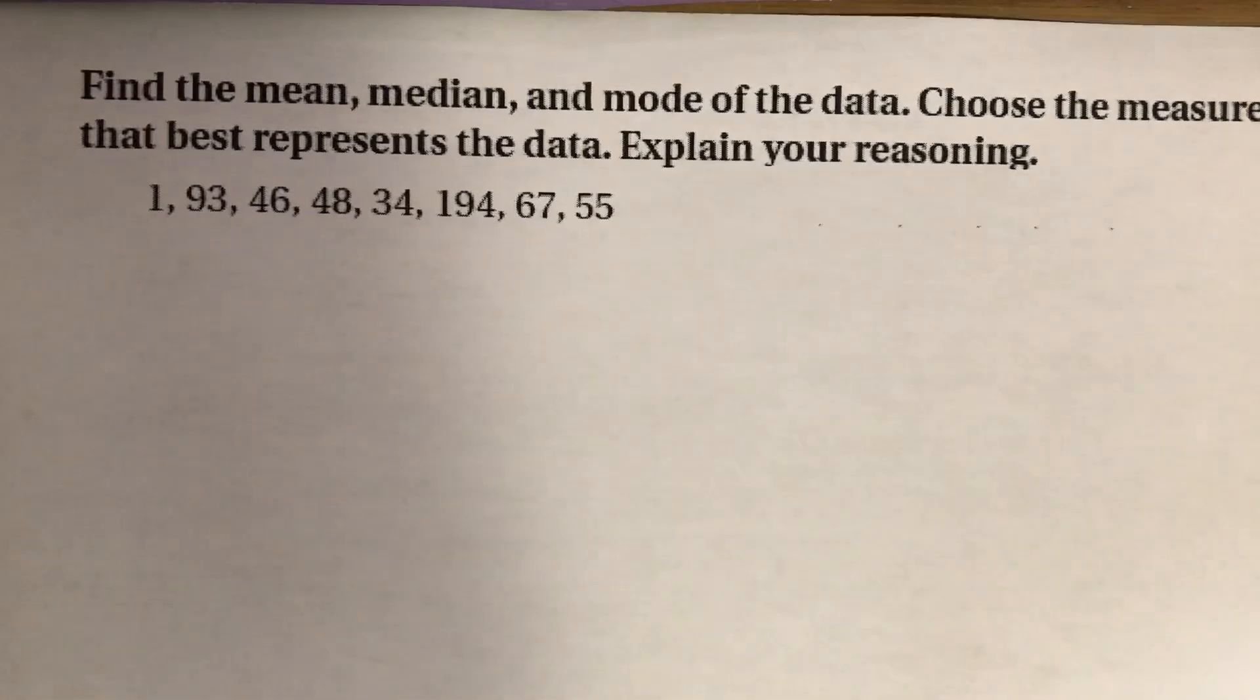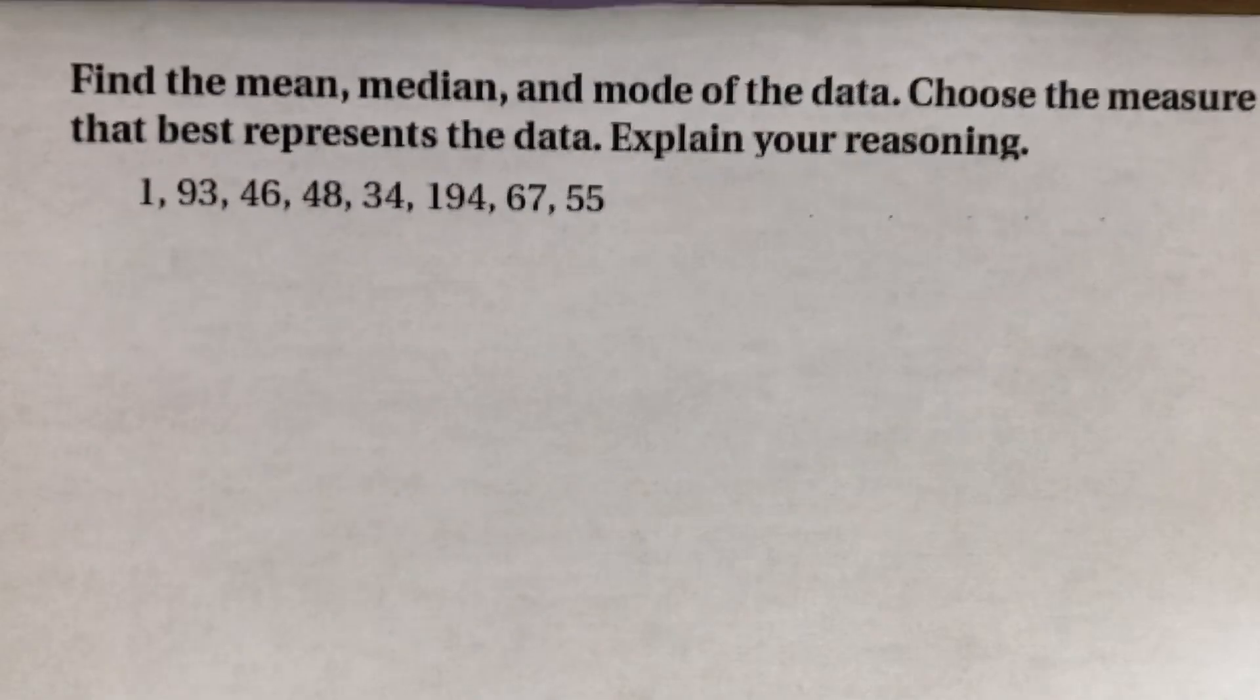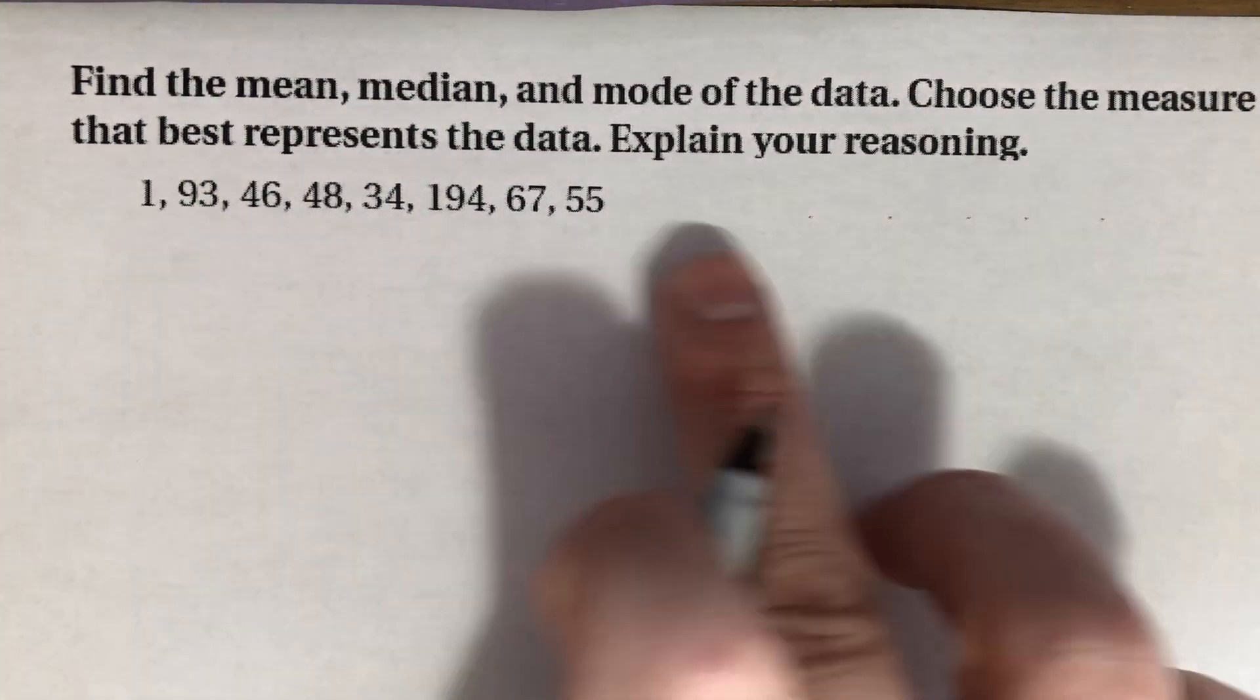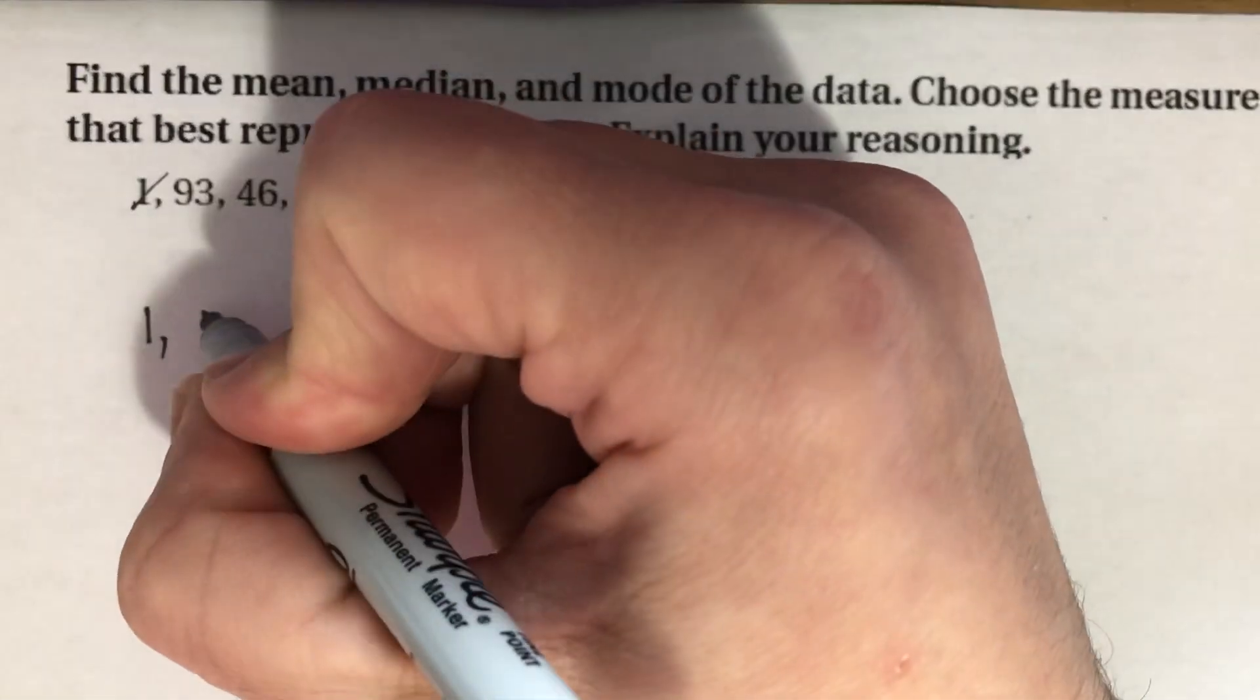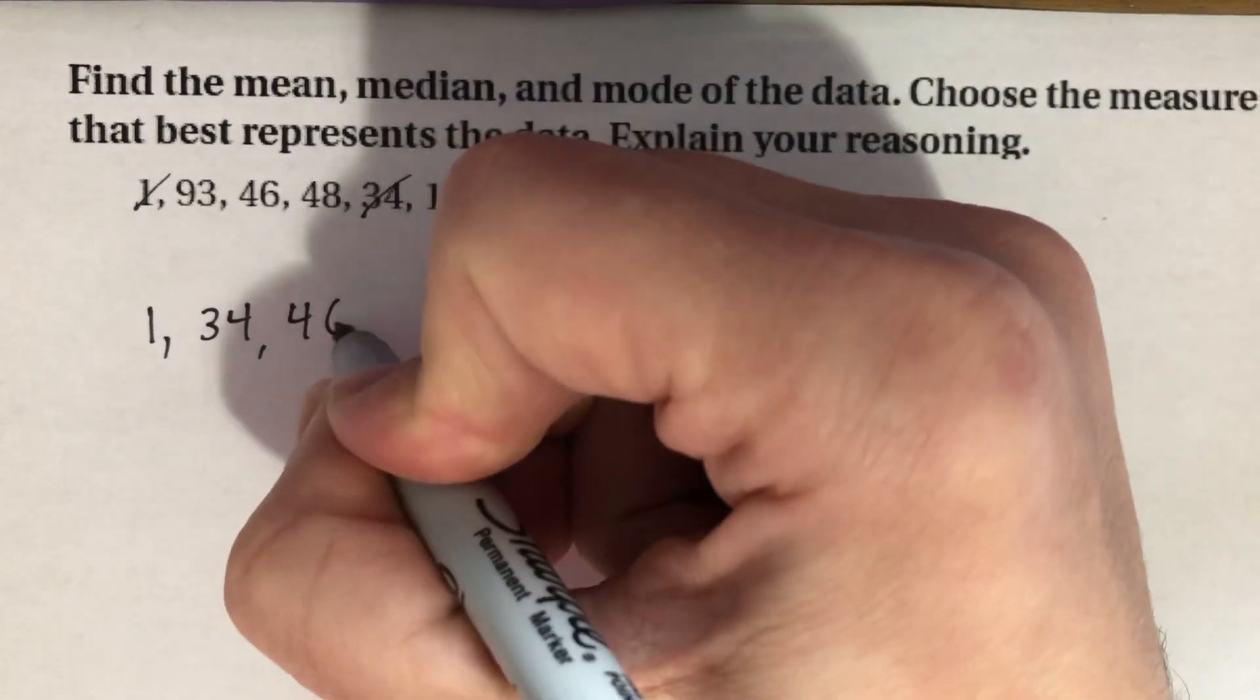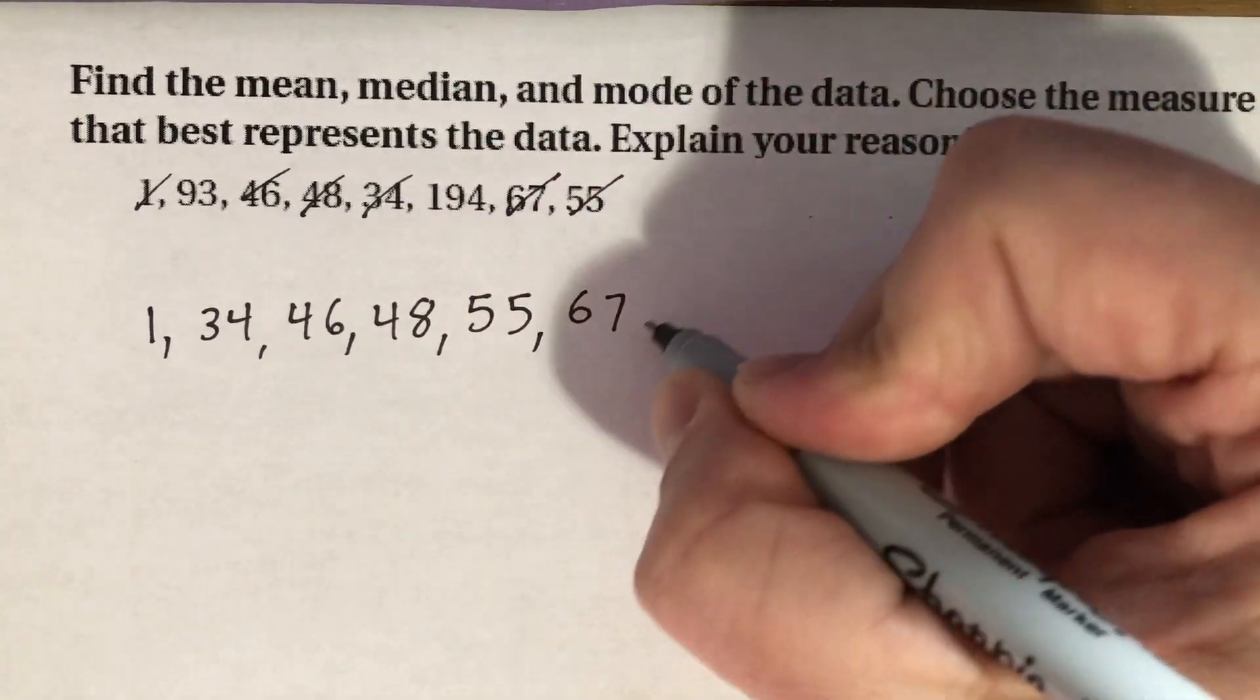So we take a look at another example. And we're going to find the mean, the median, and the mode of the data. And then we're going to choose the measure that's best representative of the data. So let's go ahead and put the numbers in order. At first, you might think these are in order because one is in the front, but you can clearly see it's not. So we'll put these numbers in order: 1, 34, 46, 48, 55, 67, 93, and 194.